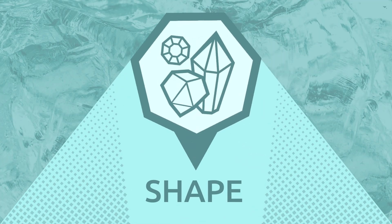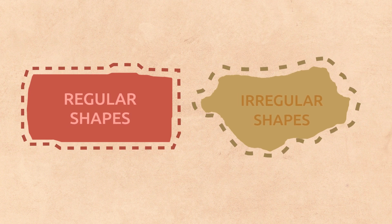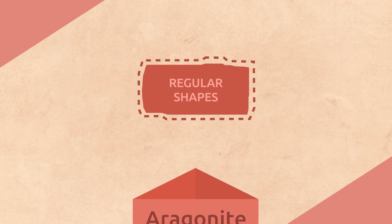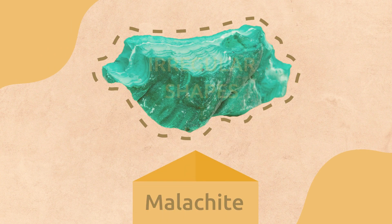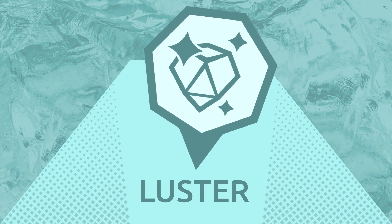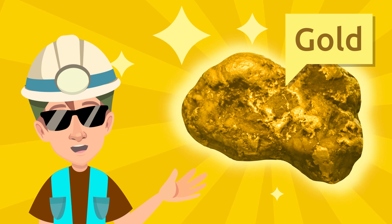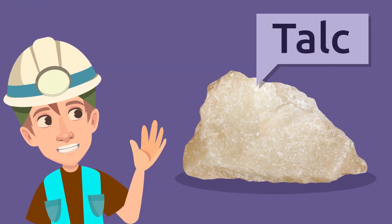Shape — minerals grow into different shapes, regular or irregular. Aragonite has a regular shape while malachite has an irregular shape. They look beautiful! Luster — there are shiny minerals like gold, and others like talc, for example, with much less luster.